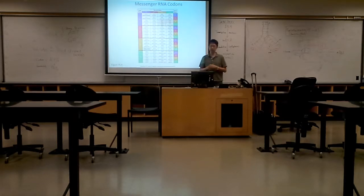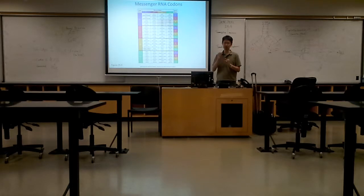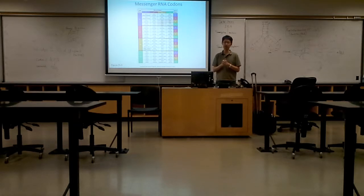Meaning that when translation occurs, it will look for this AUG sequence. As long as the messenger RNA has this AUG sequence, then protein synthesis will start. And methionine will become the first amino acid in that protein. You can think of it this way: all proteins — the first amino acid is always methionine.